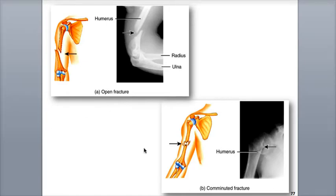A comminuted fracture is where the bone is heavily damaged at the location of a high energy impact, with lots of splintering and broken or crushed bone fragments in the area.